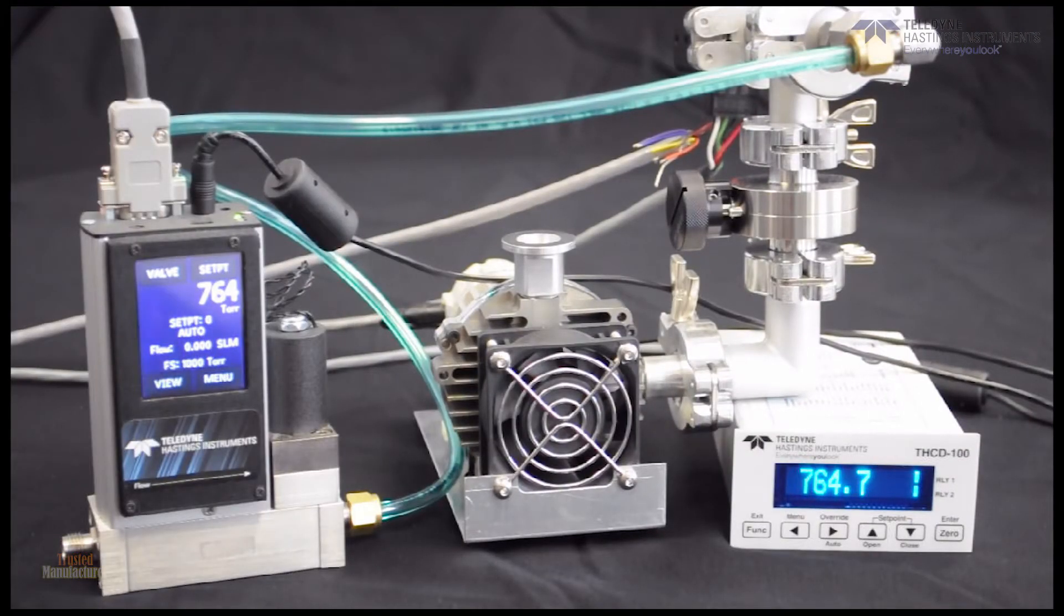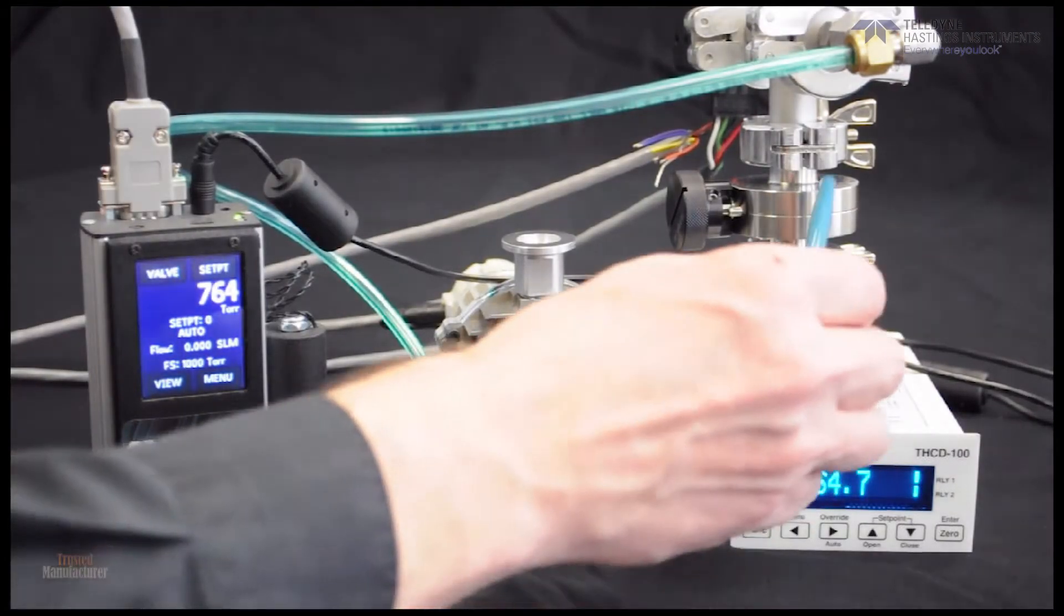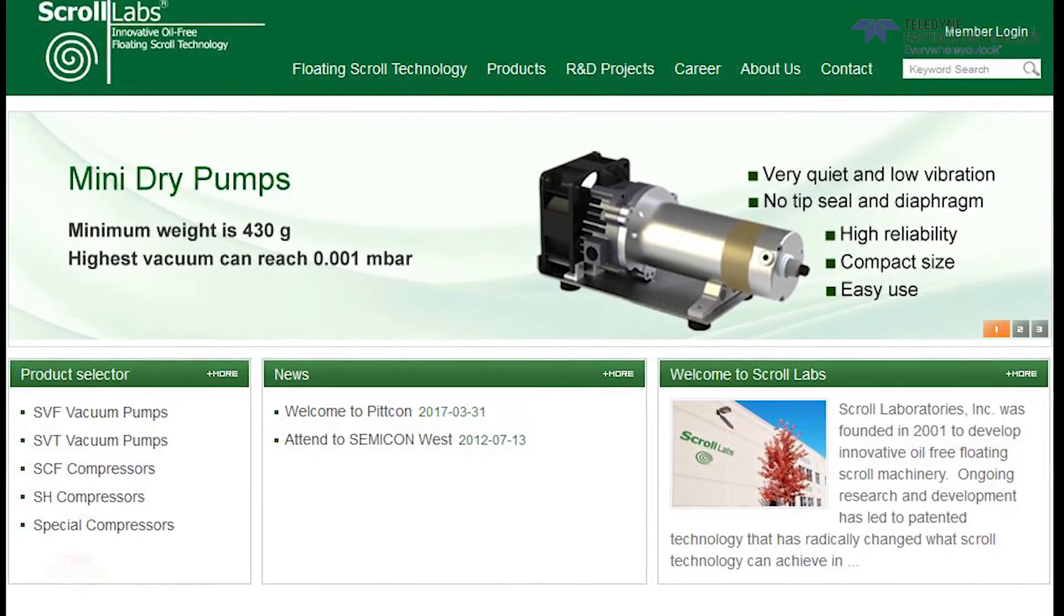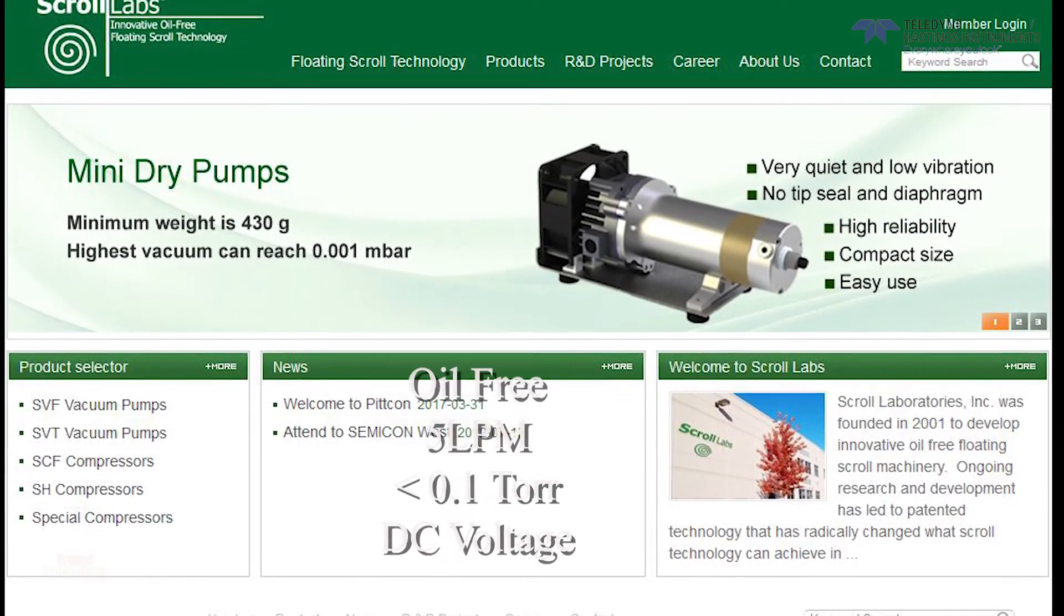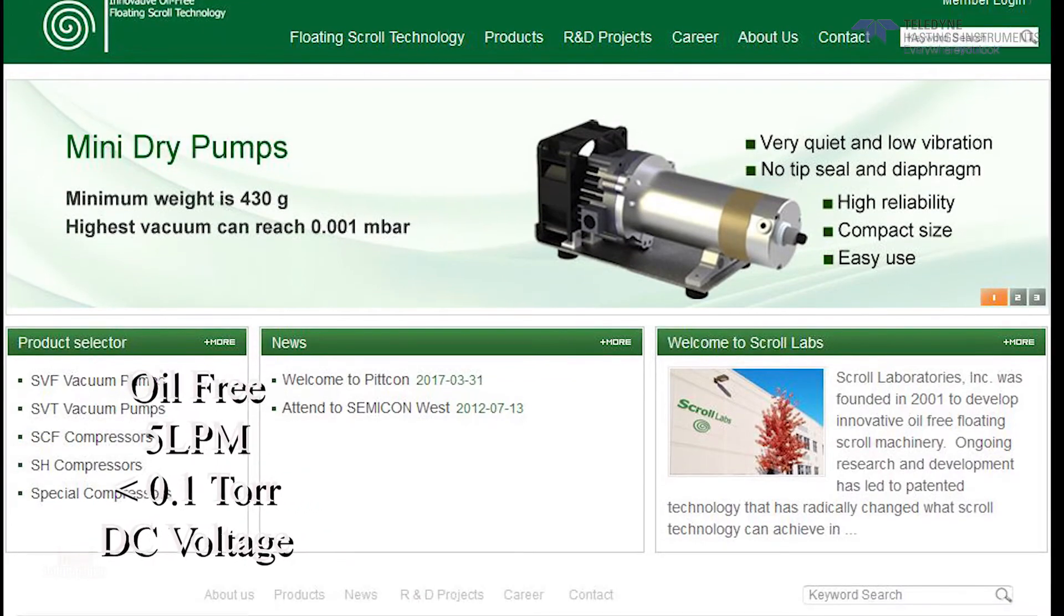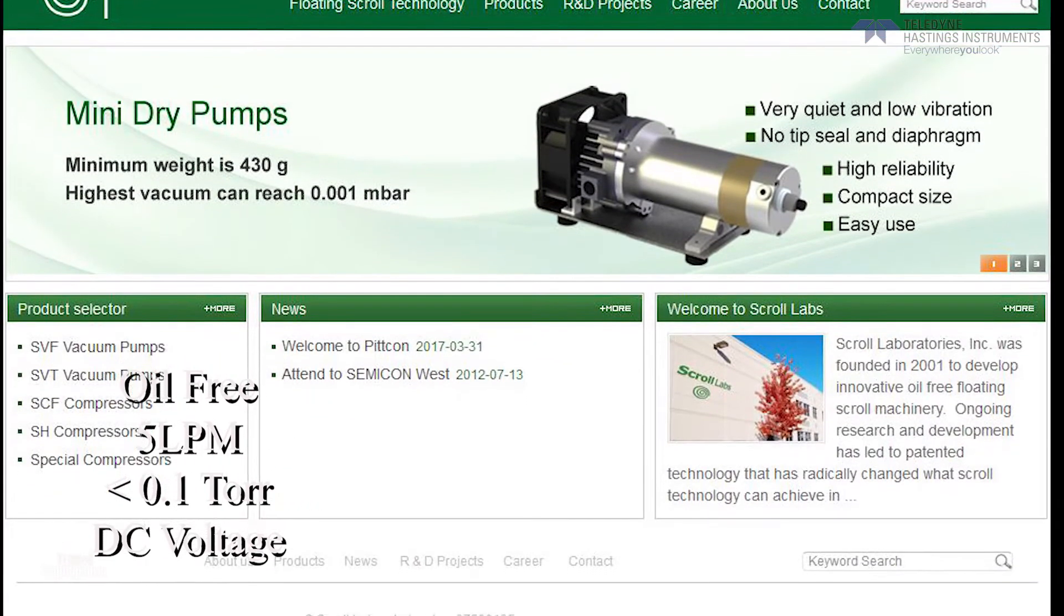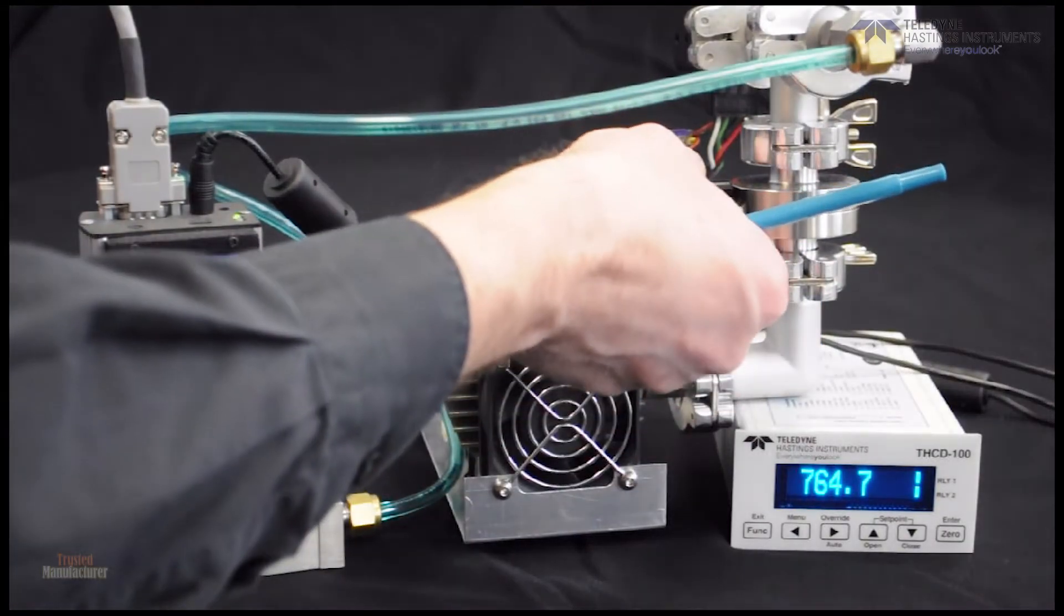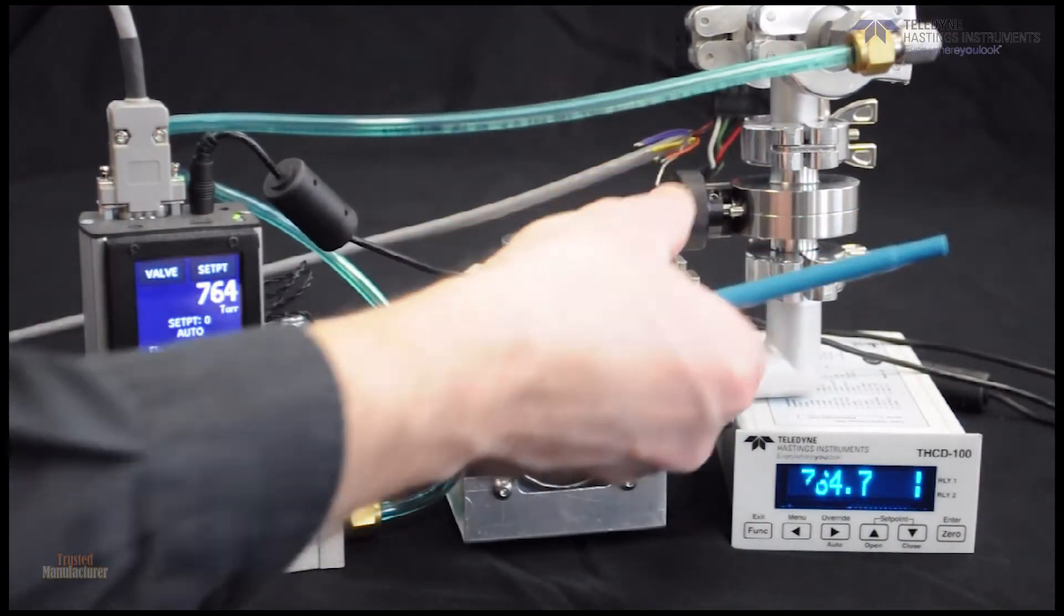I've put together a small vacuum system here. Here's our vacuum chamber region right here. The pump is this nice oil-free scroll pump from Scroll Labs. It has a pumping speed of five liters per minute and will reach pressures below 0.1 torr. I really like it because it runs off of DC voltage.